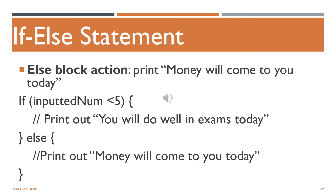To handle the false case, we add an else statement to our if block. The curly brackets of the else statement encompass the code that will run if the condition is false. Similar to the if block, the code inside the else block only runs if the condition is false. We don't always have to have an else block associated with an if block, but we do in this case because we want to perform an action when the condition is not true.